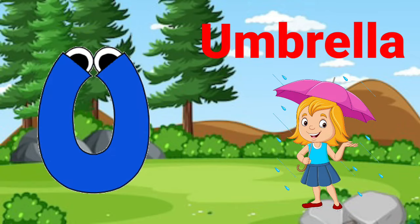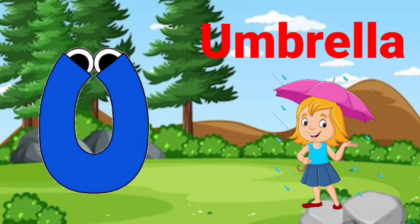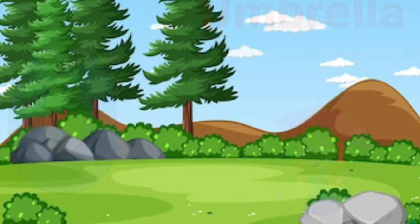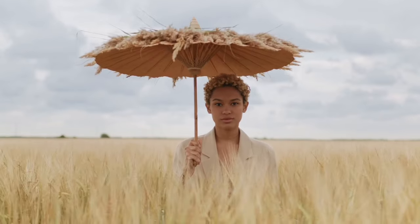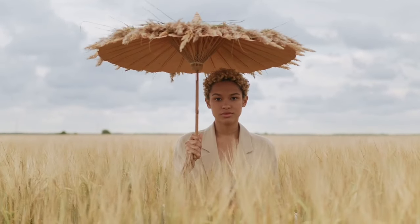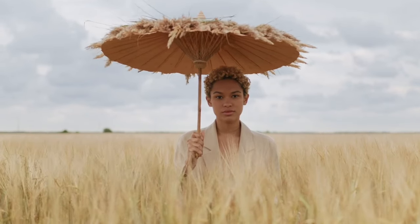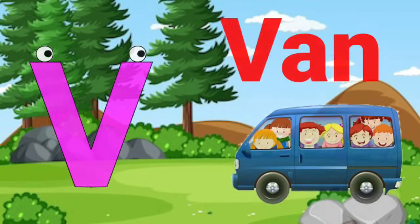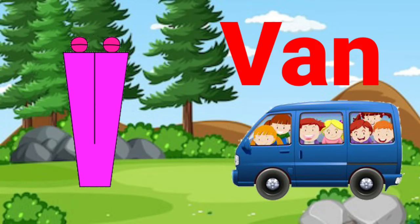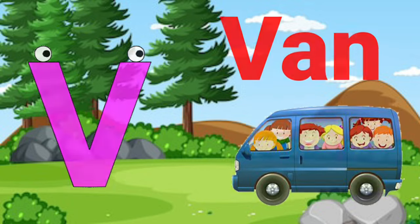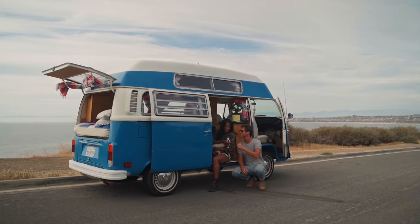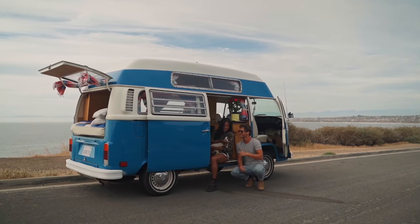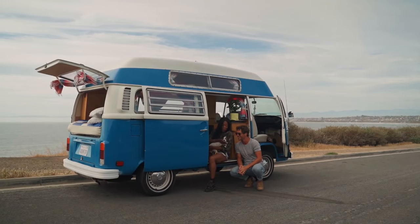U for umbrella, umbrella means cata. V for van, van means guardi.